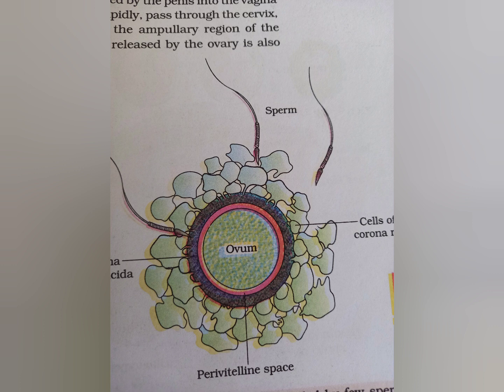During ovulation, semen is released by the penis into the vagina — this is the insemination process. The motile sperm swim rapidly, pass through the cervix, enter into the uterus, and finally reach the ampullary region of the fallopian tube. The fertilization process is completed in the ampullary region of the fallopian tube.